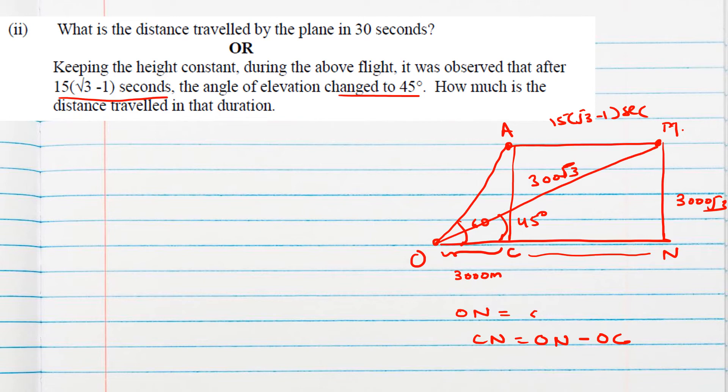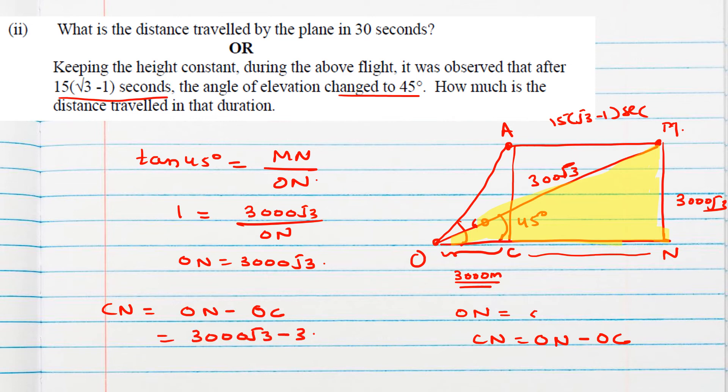We already found OC as 3000 meters. To find ON, I need this triangle and connect the adjacent and opposite sides, so I'll take tan 45 degrees, which is MN/ON. Tan 45° is 1, MN is 3000√3, so ON will be 3000√3. Then CN we can find by subtracting OC from ON, which gives 3000(√3-1) meters. That's the difference with the new angle of elevation, nothing to do with the seconds given.